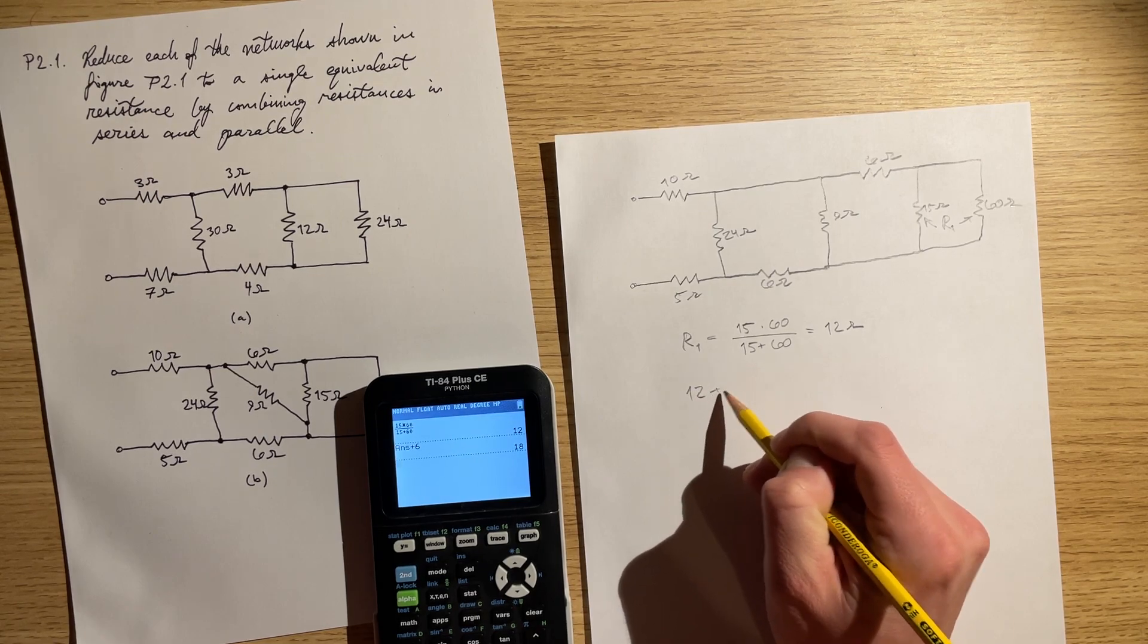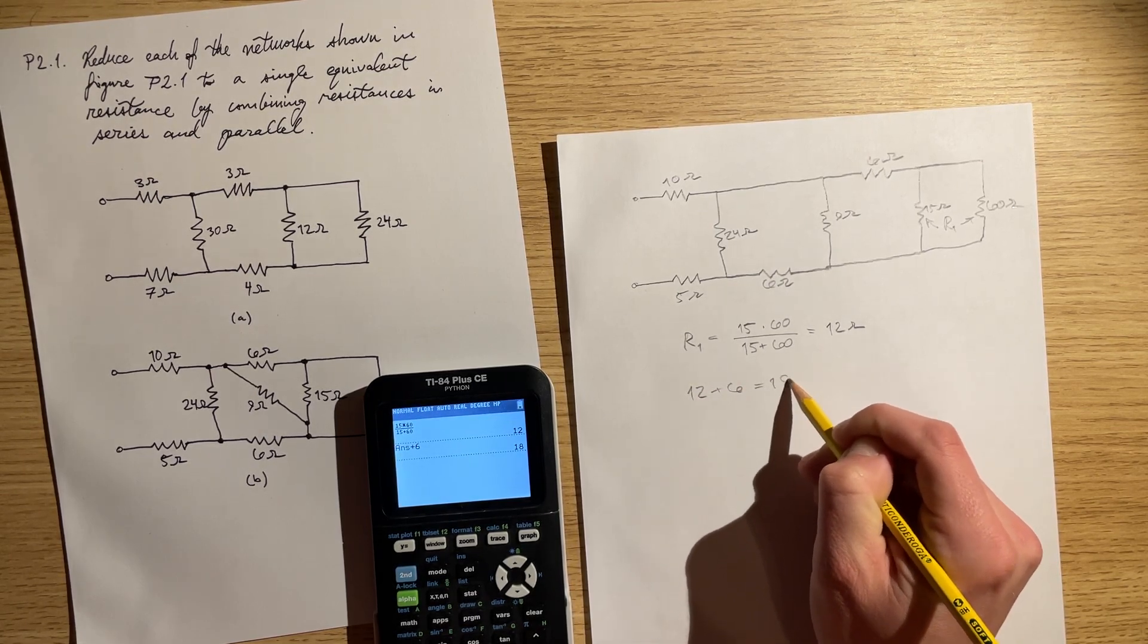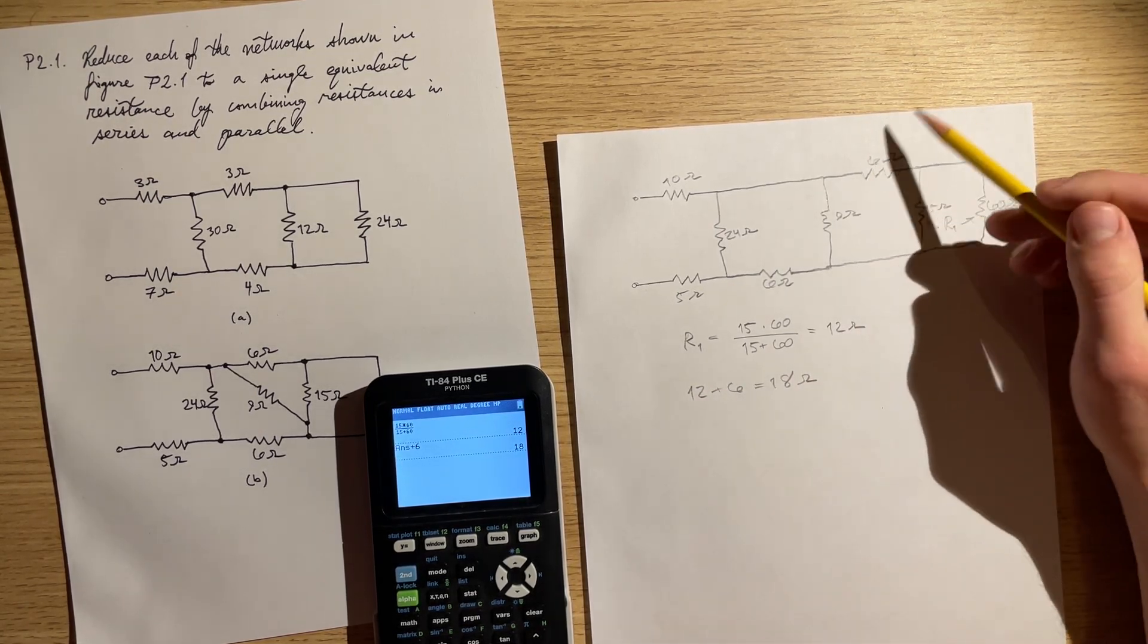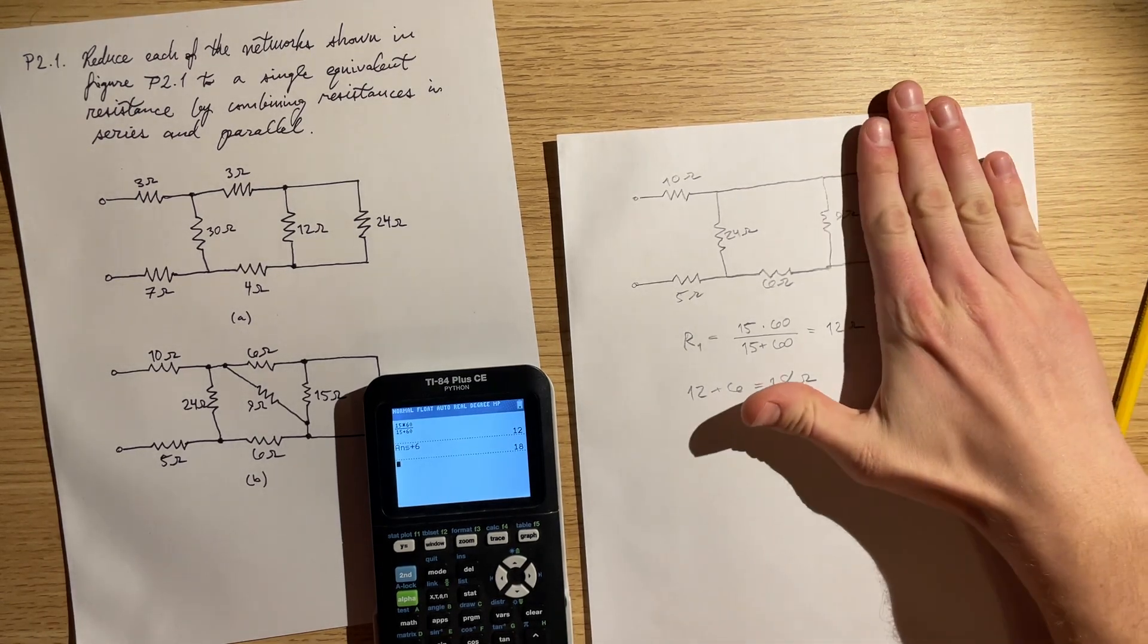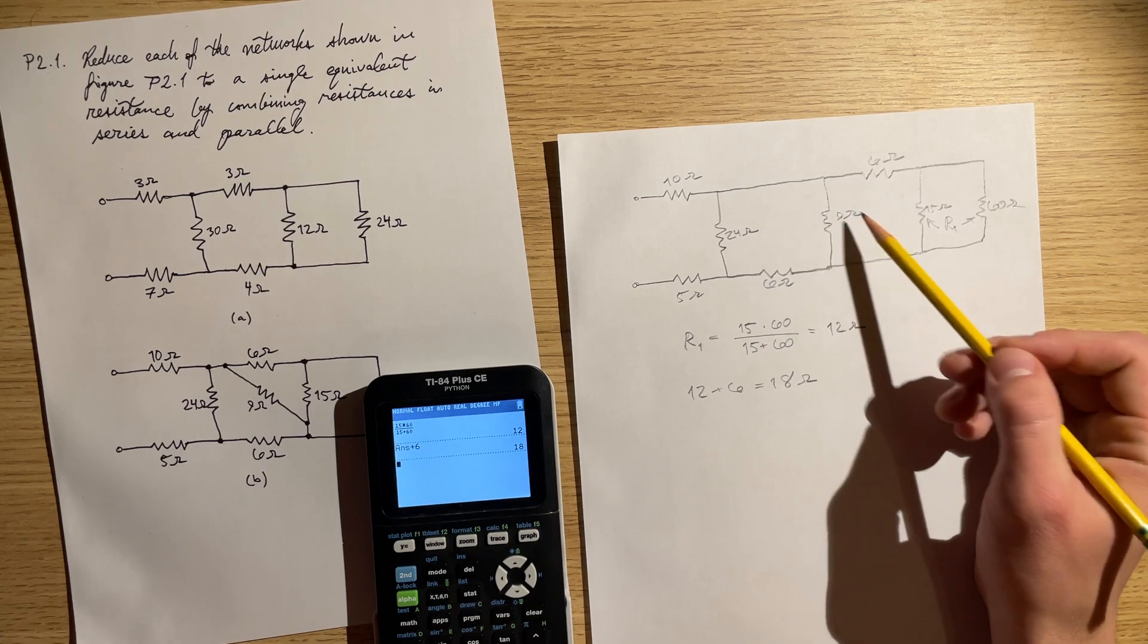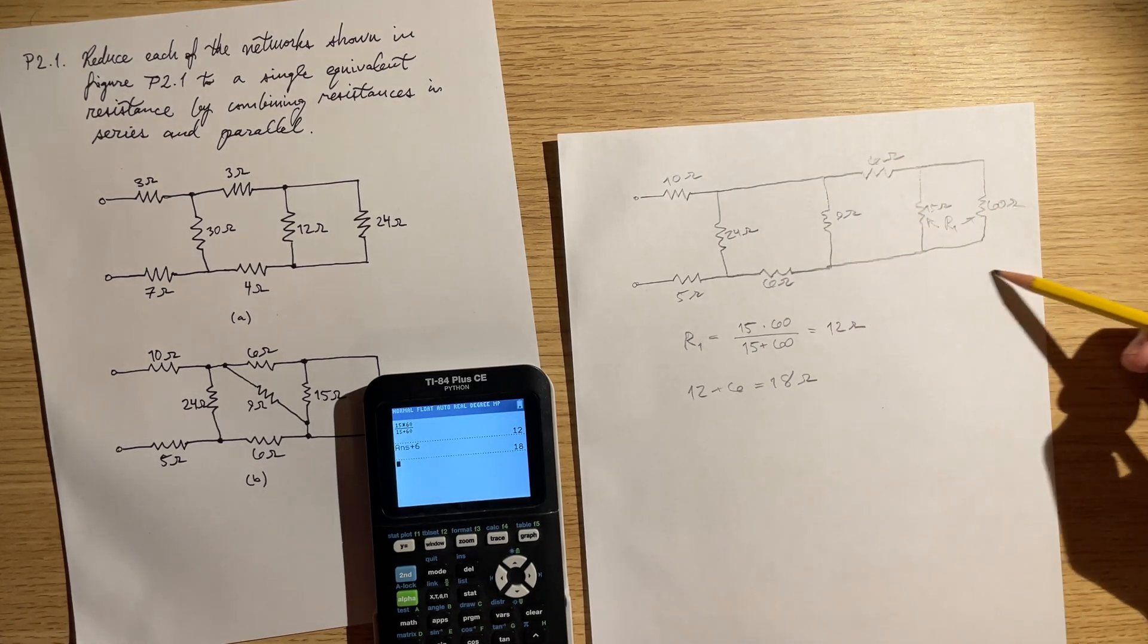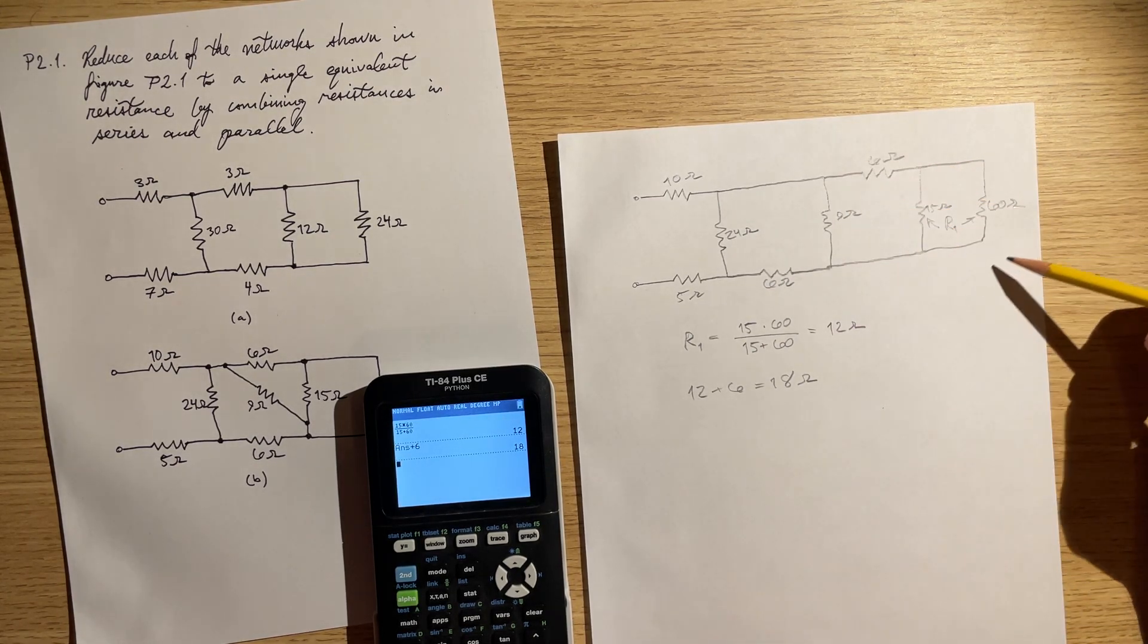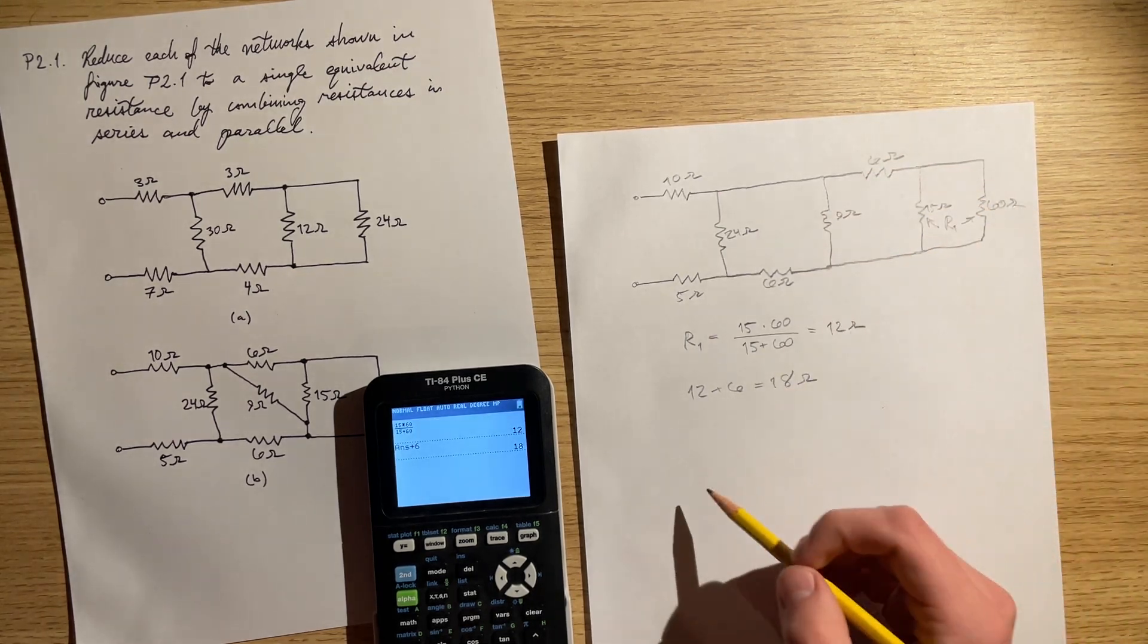So 12 plus 6 is 18 ohms. So now just imagine this whole circuit right here being in parallel, parallel resistance to this resistance right here.